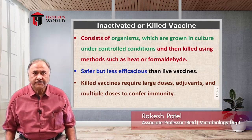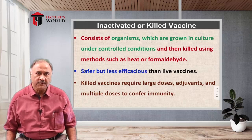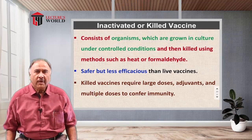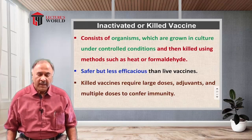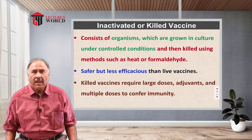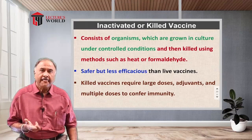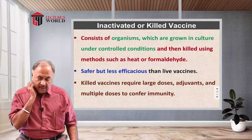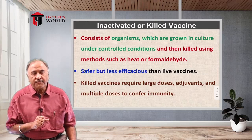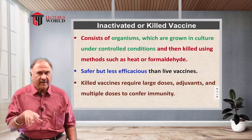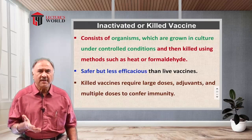When we discussed live attenuated vaccines, we saw how they are used for prophylaxis. Now, compared to live attenuated vaccines, we have another variety — inactivated or killed vaccines. As the name indicates, the organisms are inactivated and killed. This vaccine suspension consists of organisms grown in culture under controlled conditions, which are then killed using physical or chemical methods.